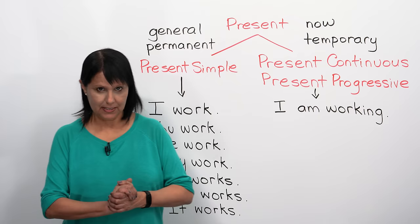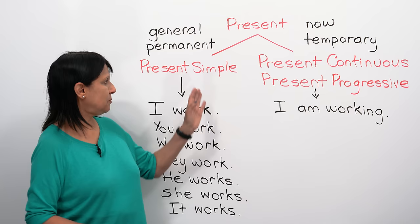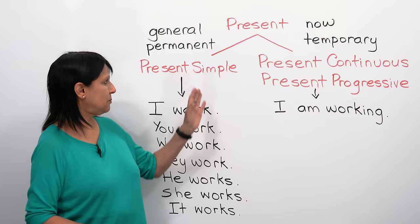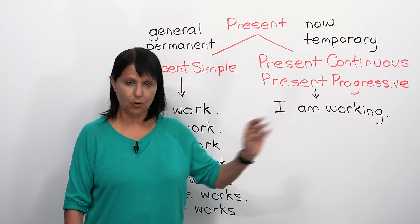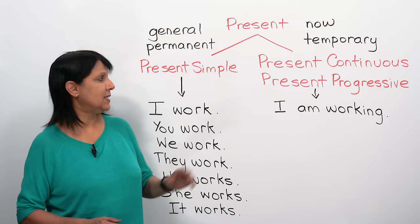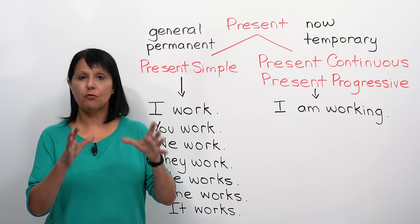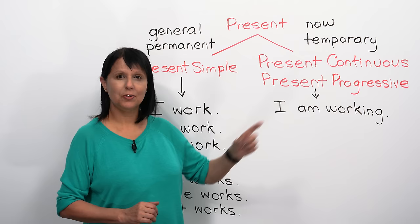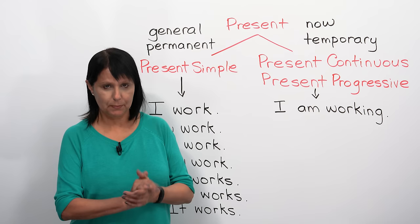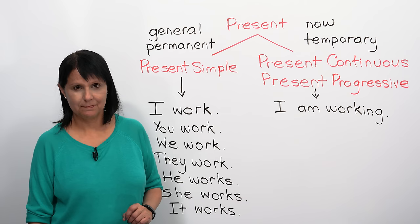In this lesson, we're going to look at the two basic ways that we can speak about the present in English, and they are the present simple and the present continuous, or present progressive, as it's also called. Although we are focusing on the present simple, I want to give you a little overview so that you understand the basic differences between these two tenses. In present simple, we would say, I work. And in present continuous, we would say, I am working.